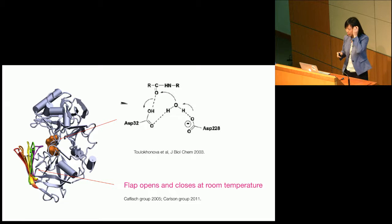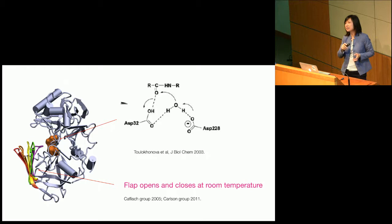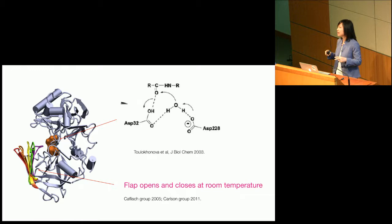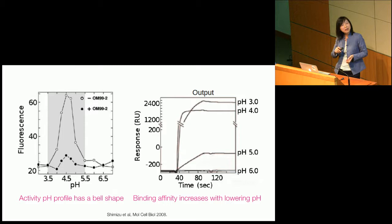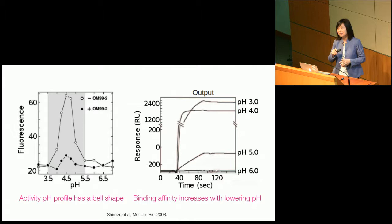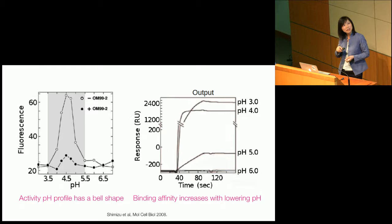Let's take a look at the structure of BACE1. There are two important features. First, it has a very long beta-hairpin loop that can cover the active site — at room temperature, it can move. There's also an active site containing two aspartic residues looking at each other: one acts as a base, the other acts as an acid. Experimentally, we know the enzyme — since it resides in the endosome — is most active at about pH 4.5 to 5. The activity decreases sharply below pH 3.5 or above pH 5.5. Binding data collected in a pH-dependent manner showed that as pH decreases, binding affinity increases.